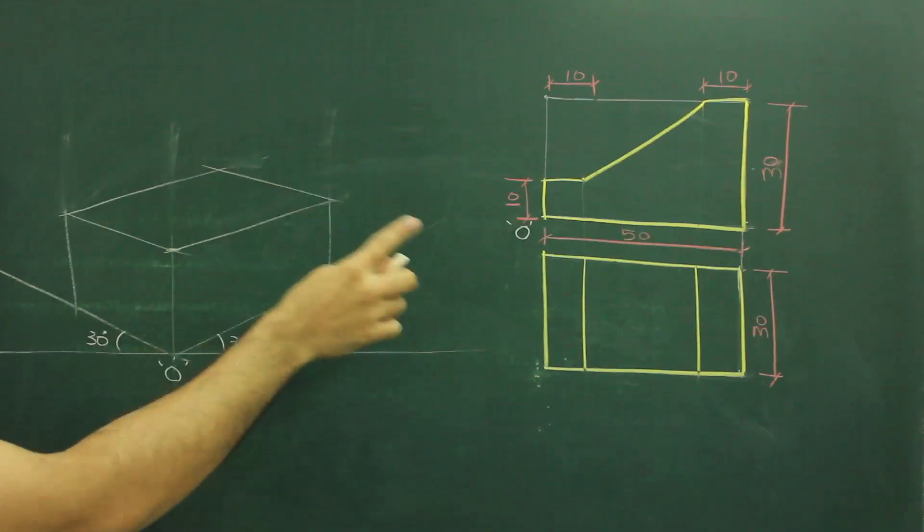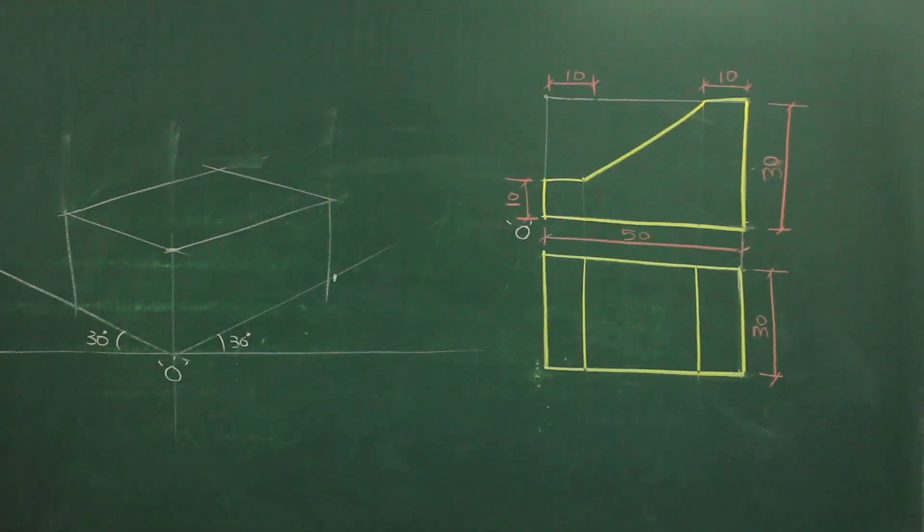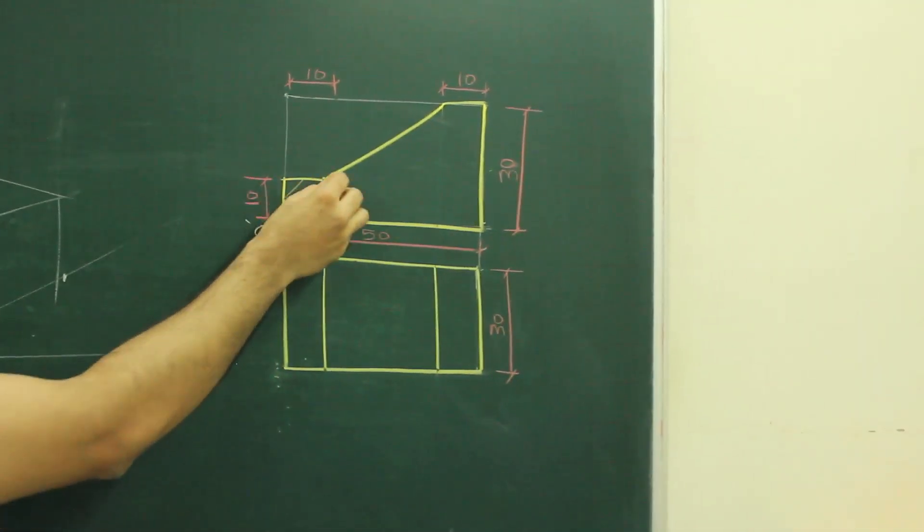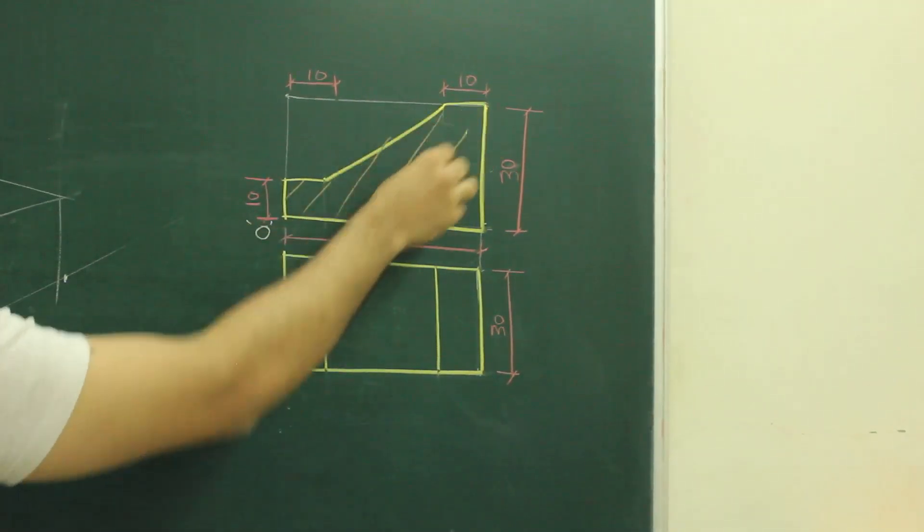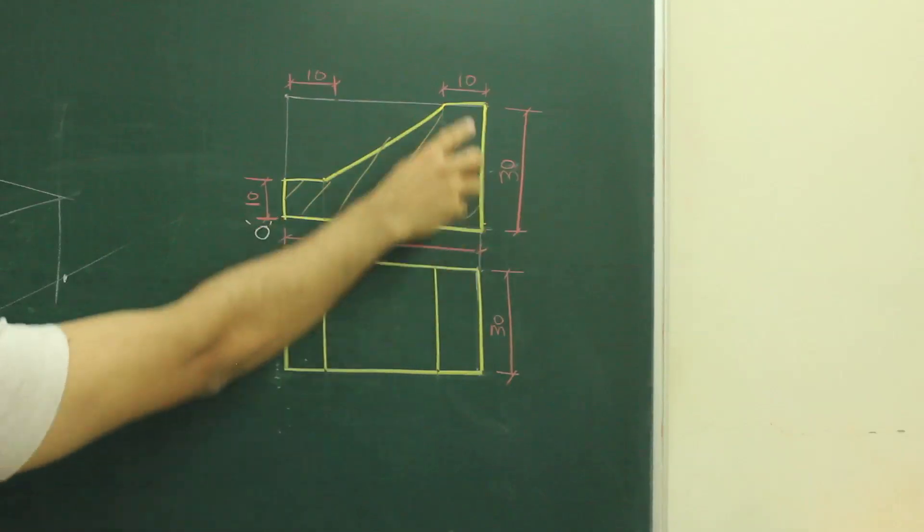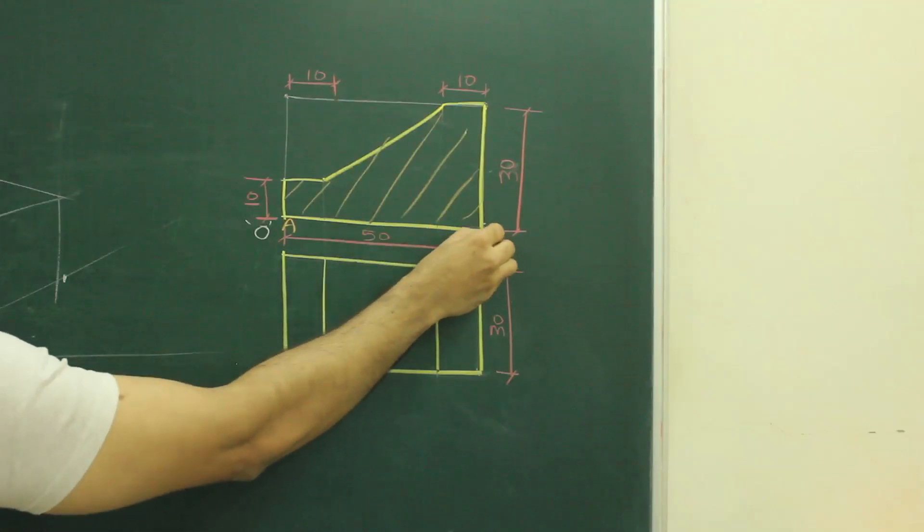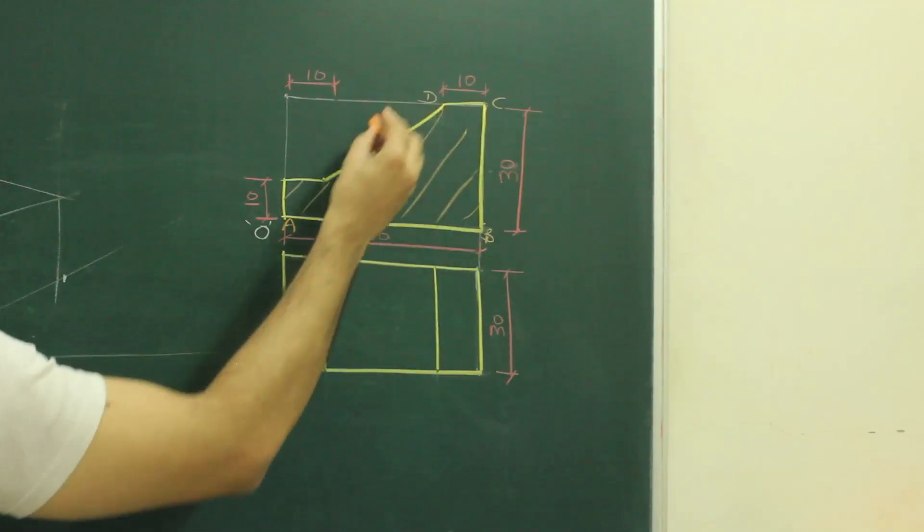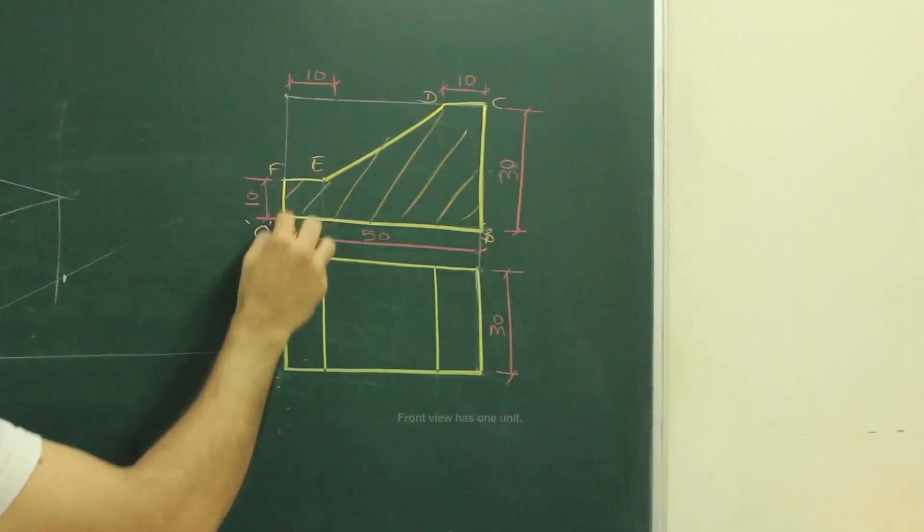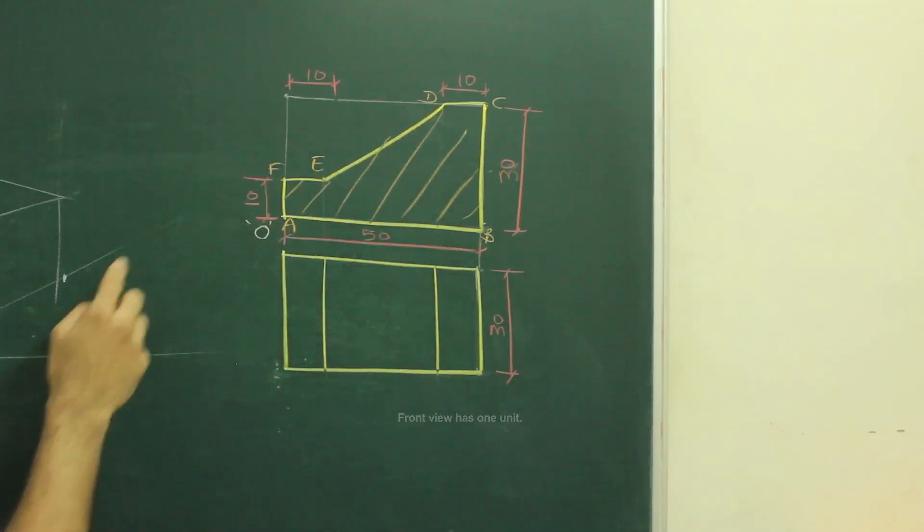Now after this, if you notice front view, this entire block, if you see A, B, C, D, E, F. This entire A, B, C, D, E, F is one unit. So what we will do, first we will try and draw that unit.